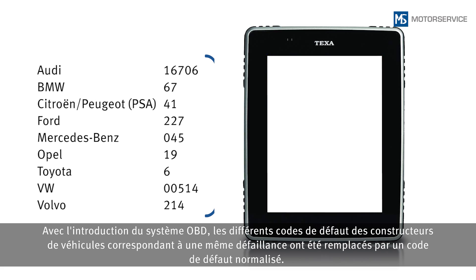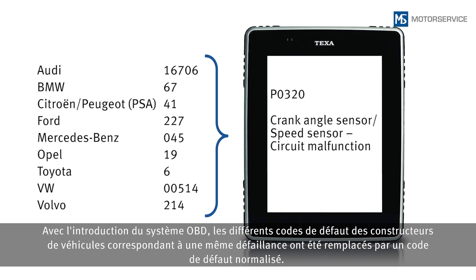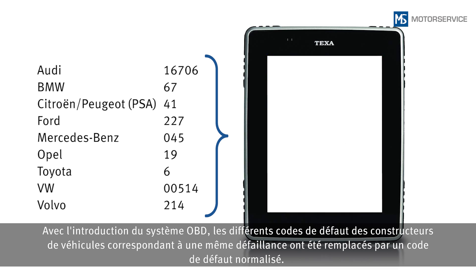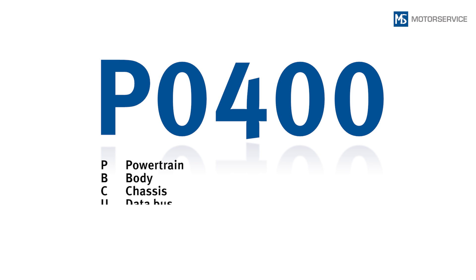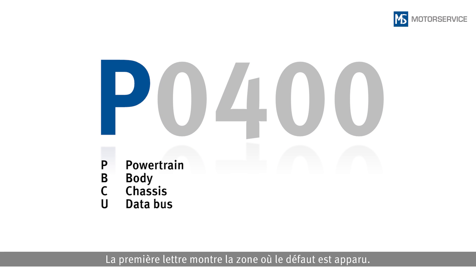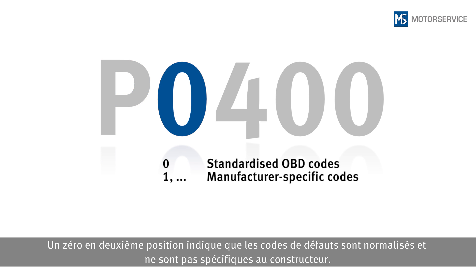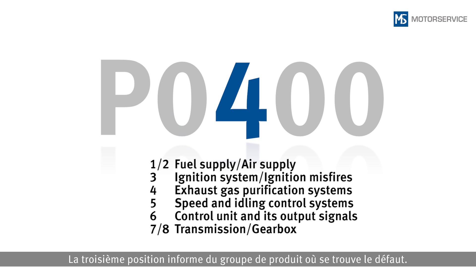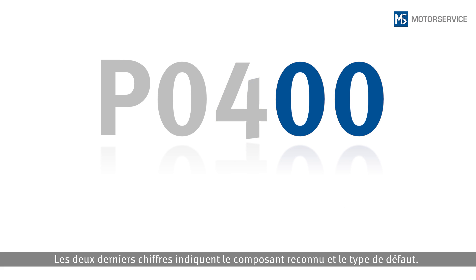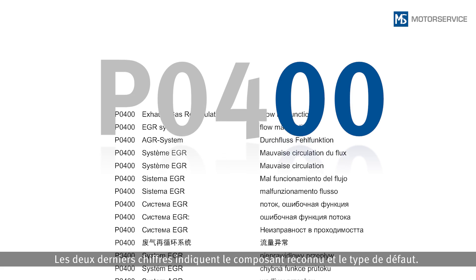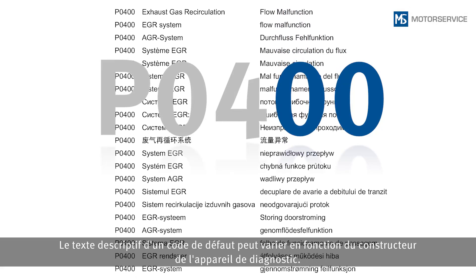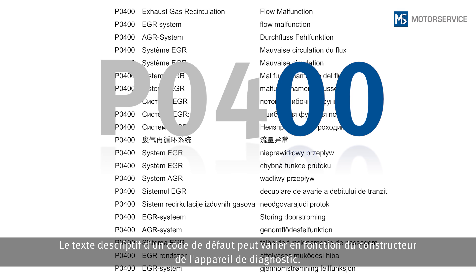With the introduction of OBD, the various DTCs used by individual vehicle manufacturers for just one error were replaced by standardized DTCs. The first letter indicates the area in which the error occurred — errors on emission-related components are indicated by a P for powertrain. A zero in the second position indicates standardized DTCs independent of the manufacturer. The third position indicates the assembly group, and the last two digits stand for the detected component and the type of error. The wording of DTC text may vary depending on the scan tool manufacturer.